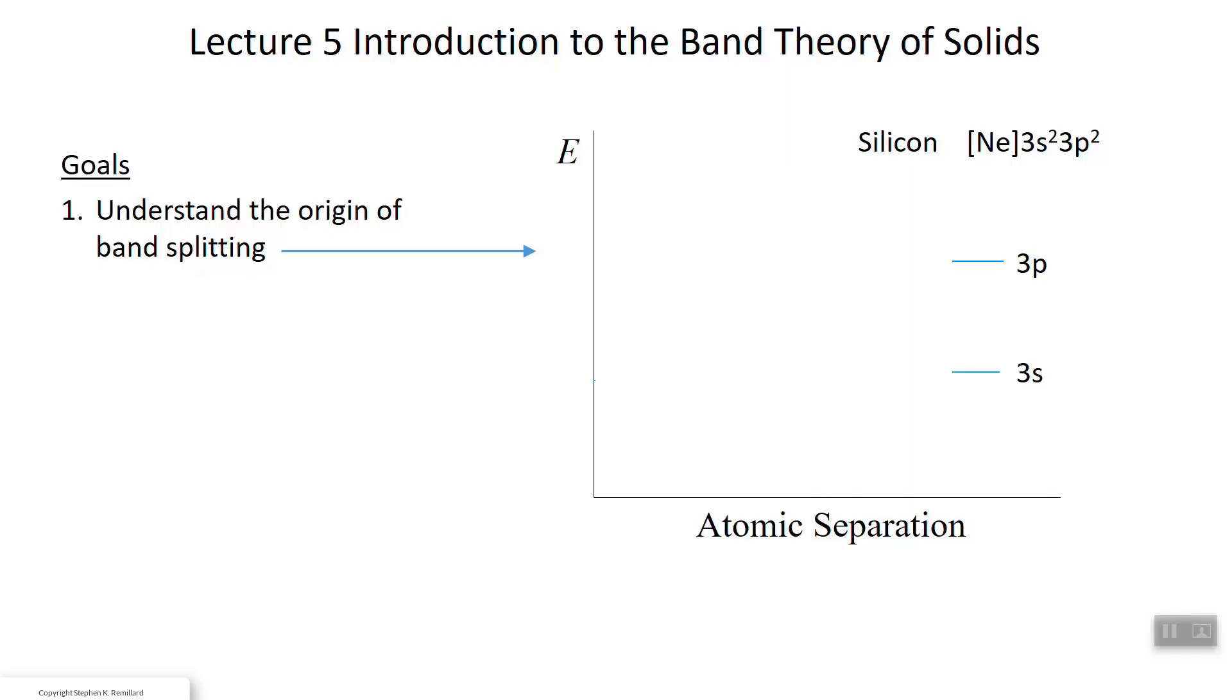Now if I take two silicon atoms and move them close to each other, something interesting happens. These are the energy levels as a function of how far apart these two atoms are from each other. As the atoms get closer and closer they reach a point where you start to notice those energy levels split. The 3p splits into two levels, the 3s splits into two levels. I can't say which one of these levels is the left atom and which one is the right atom. It's both atoms. These are the 3p states and these are the 3s states for the system of two atoms.